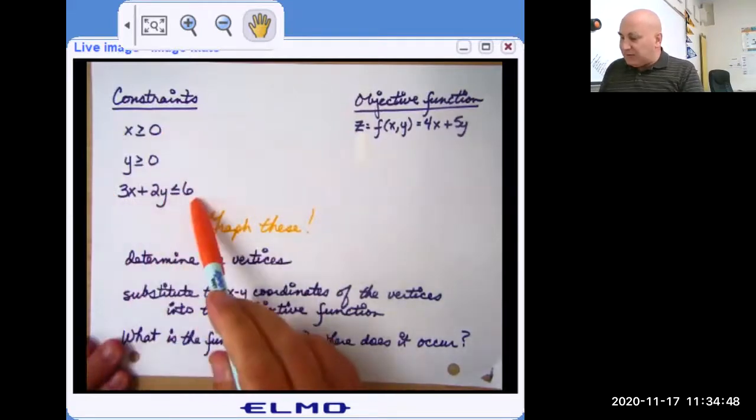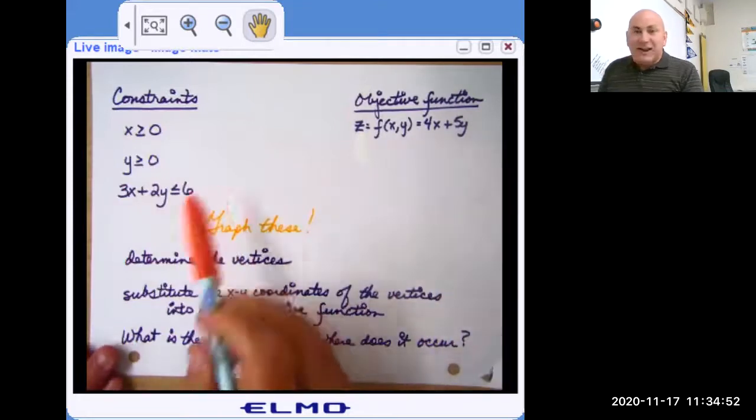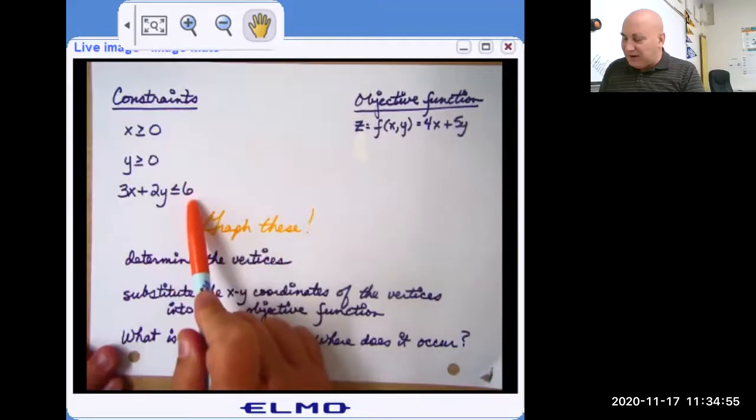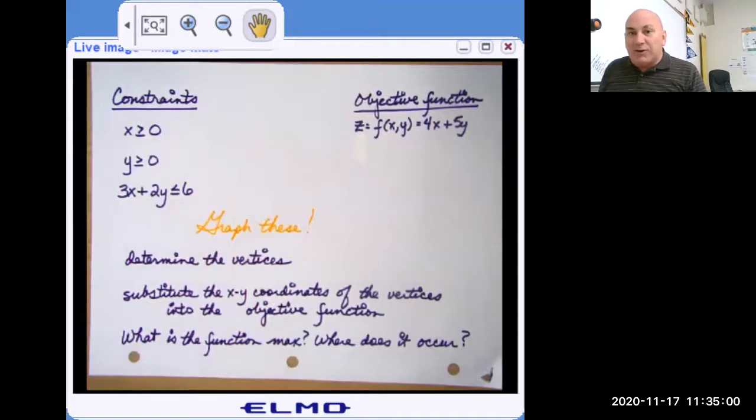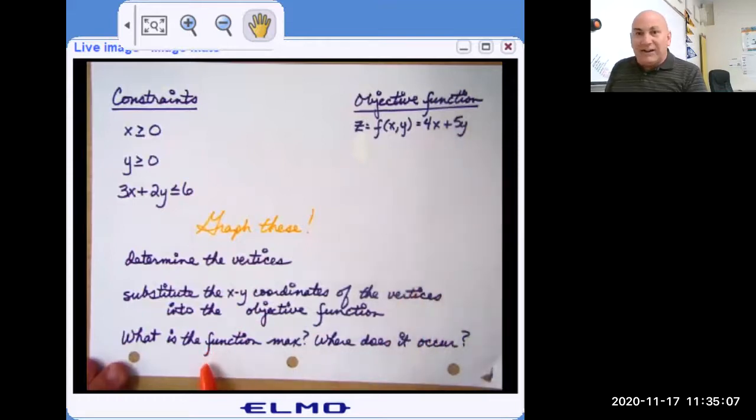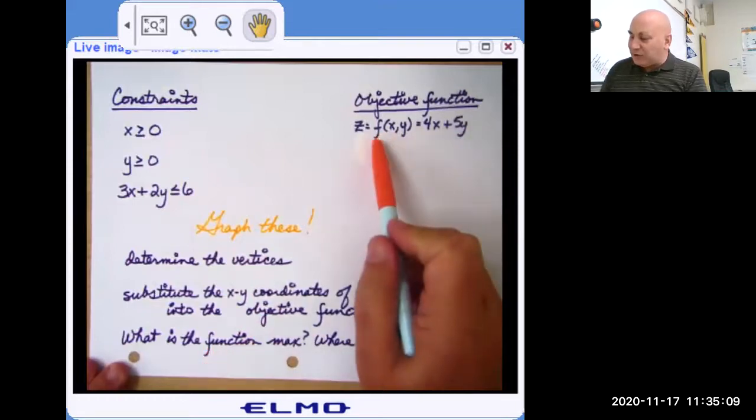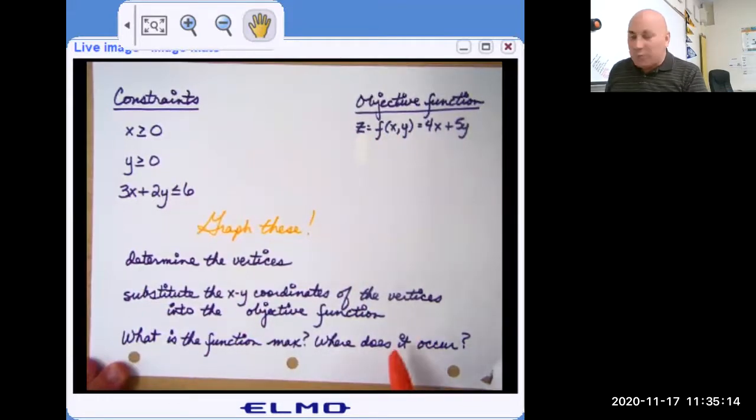So here are the constraints. Here's our objective function. So what I'm going to ask you to do in class is to graph these constraints, determine the vertices. Then we're going to take those X and Y coordinates from the vertices, substitute them into this objective function. And then I want to know what is the maximum value of this objective function? And at what X, Y point does it occur? So write this down and then we'll go over it in class.